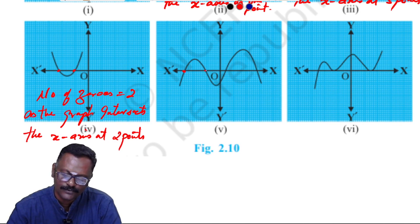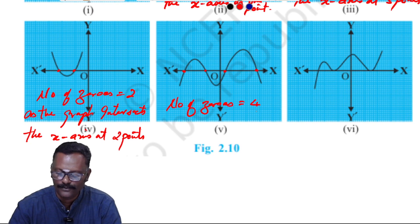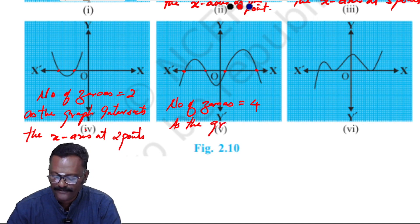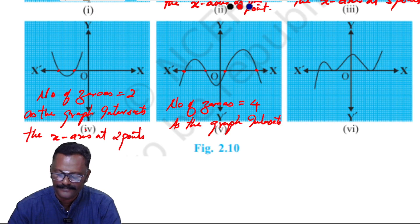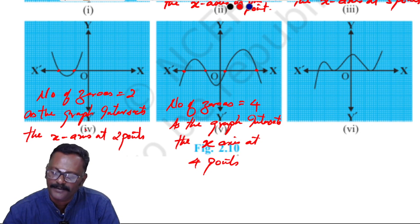Let us look at the fifth graph: one, two, three, four. Number of zeros equal to four. Reason: as the graph intersects the x-axis at four points.